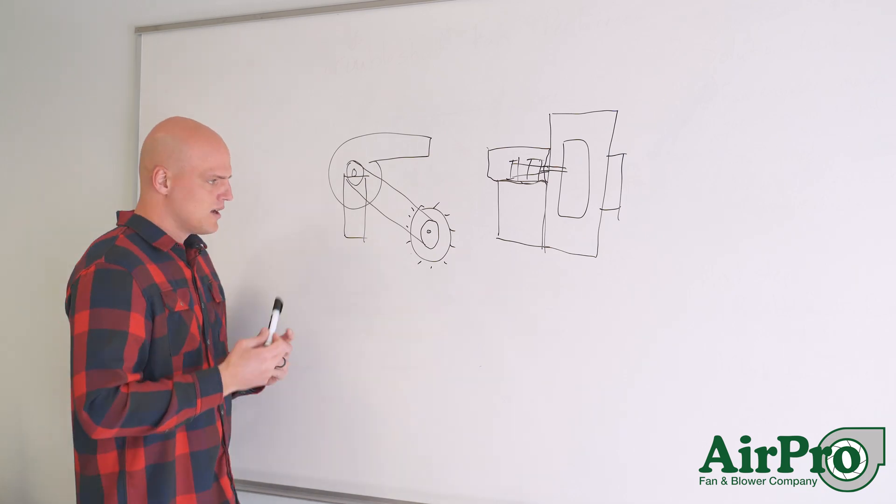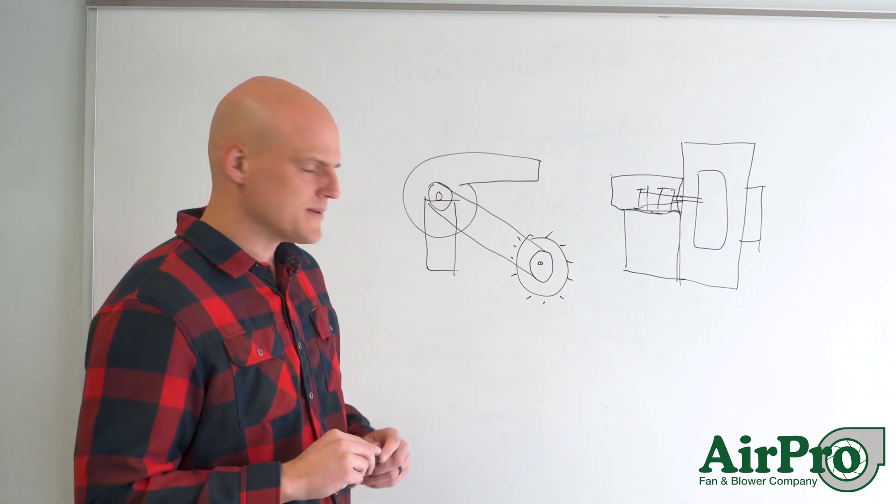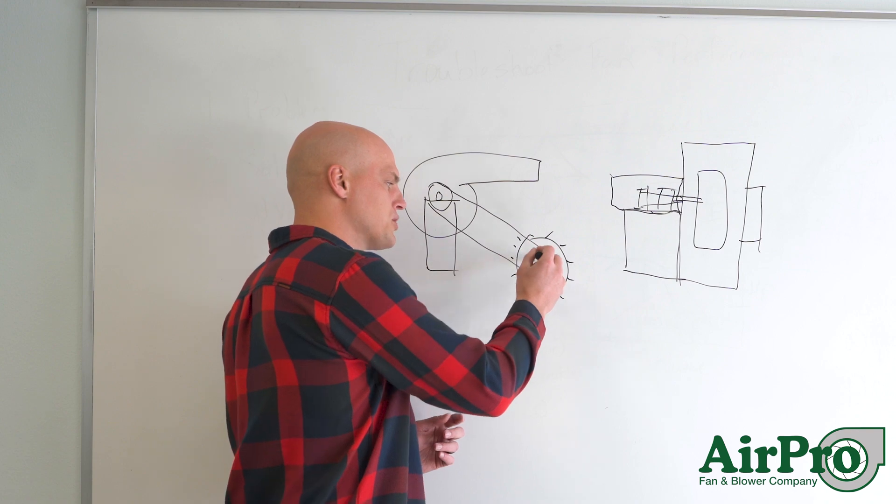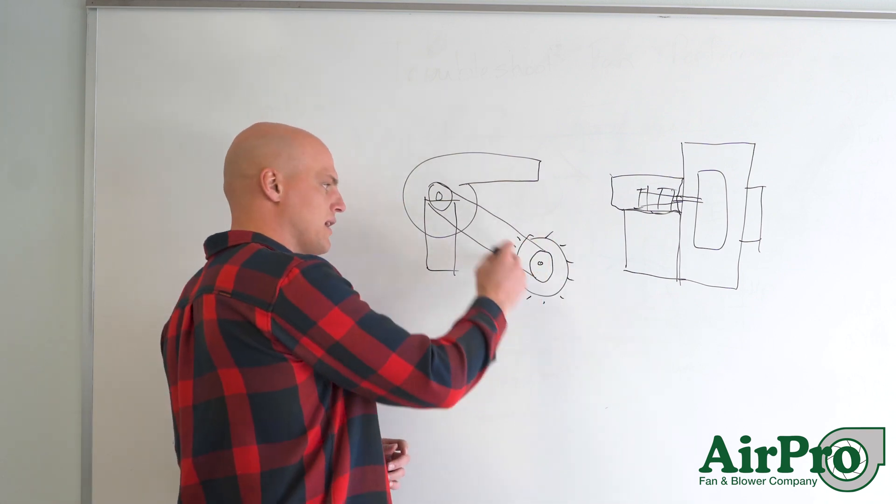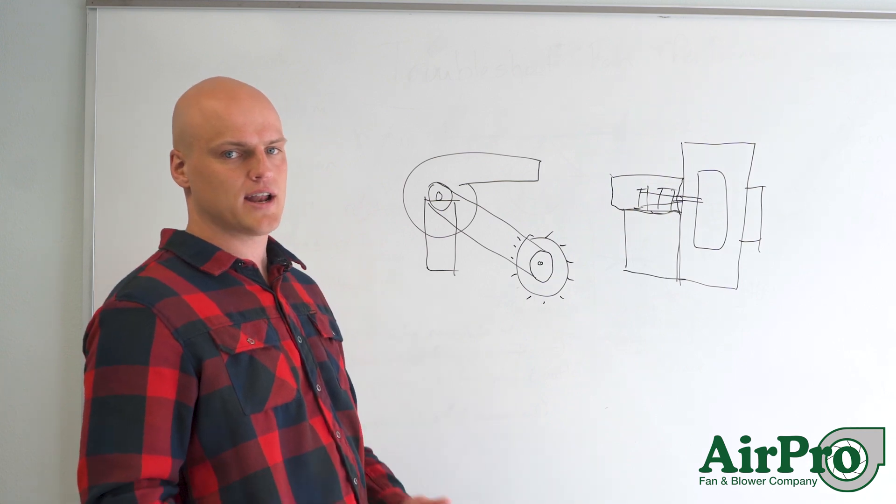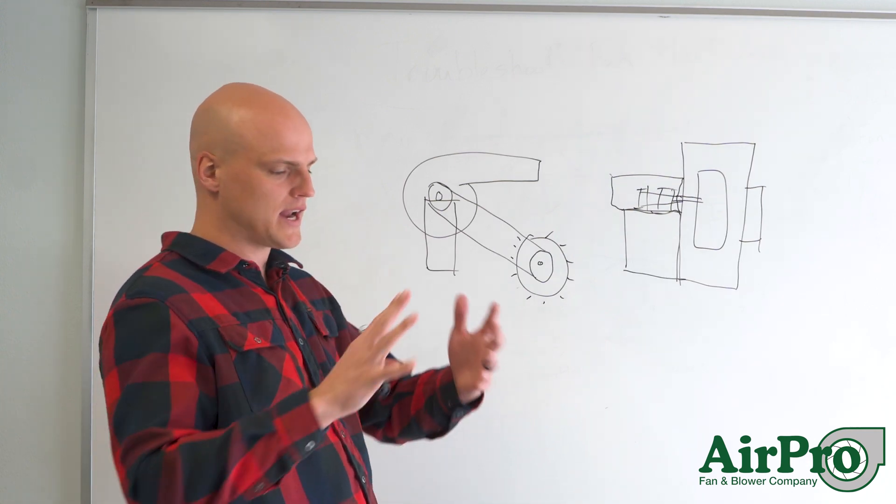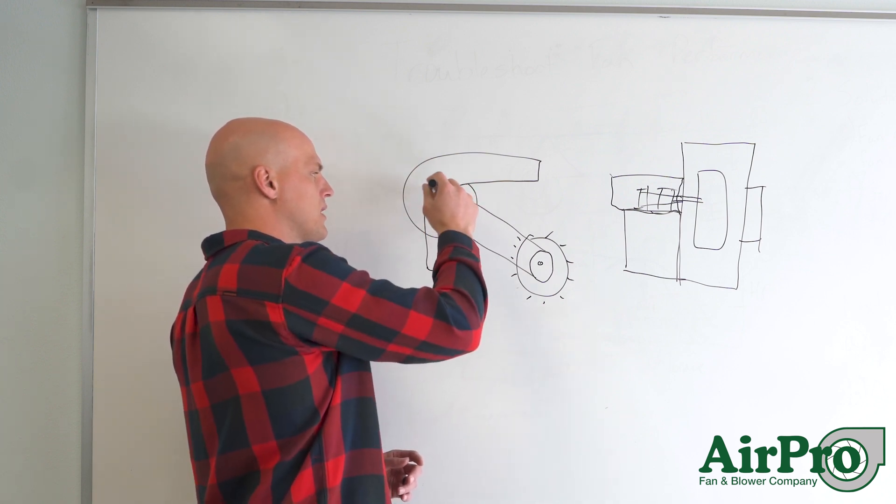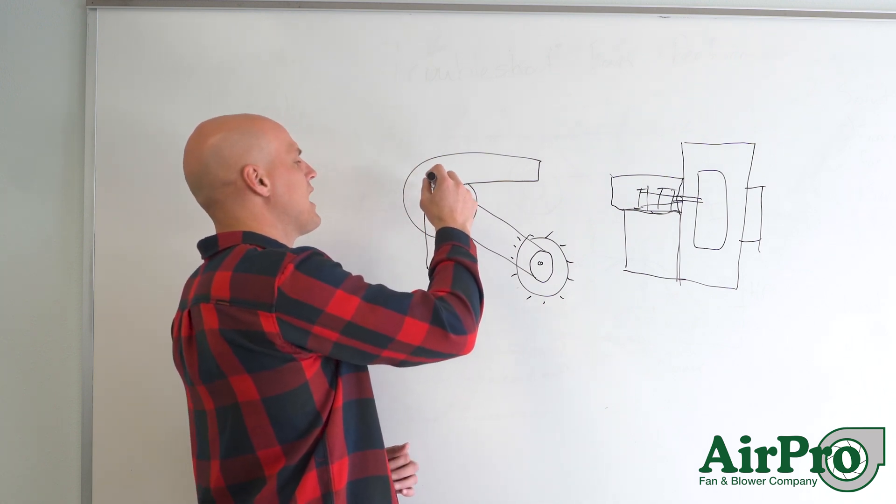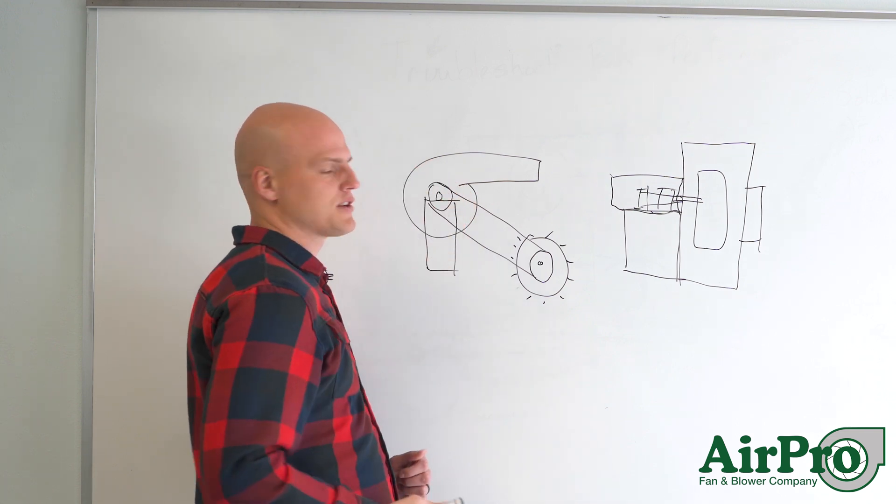Number two, think about the parts. You got a bushing on the motor shaft, a sheave on the motor shaft, the individual belts themselves. You might have up to 10, 12 belts. You might have a big banded belt. You got another sheave on the fan shaft, and you have a bushing on the fan shaft.